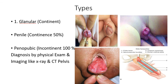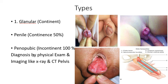In glandular epispadias, only the glans is deformed and patients are always continent. In penile epispadias, when the external meatus is somewhere on the shaft, there is a 50% chance the child will be continent and 50% incontinent. In penopubic epispadias, the whole penile urethra is open and incontinence is almost 100%. Diagnosis is by physical examination, and sometimes imaging techniques like X-ray and CT pelvis are required.